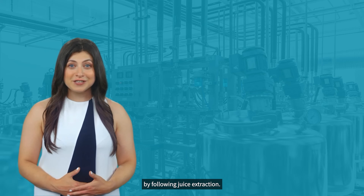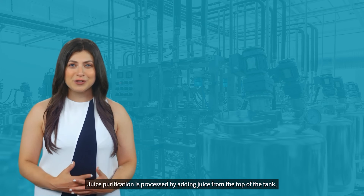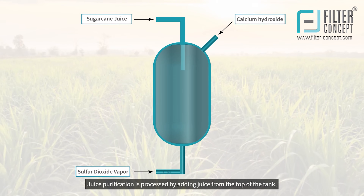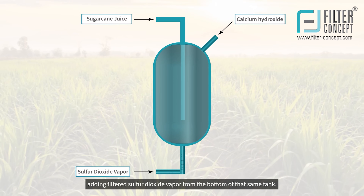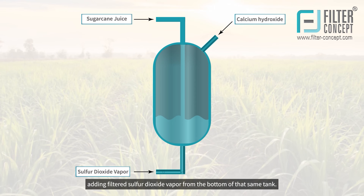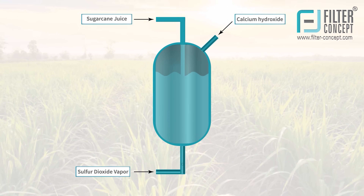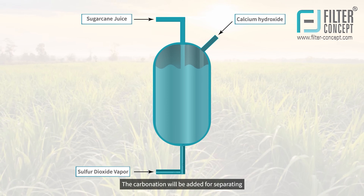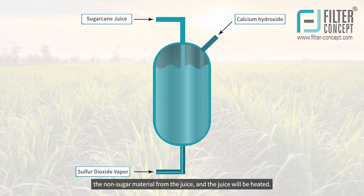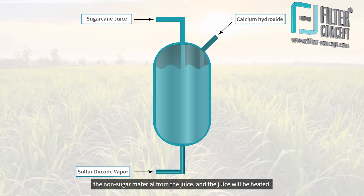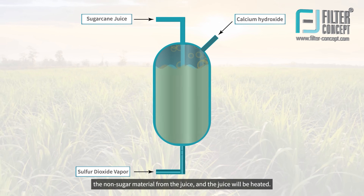Following juice extraction, juice purification is processed by adding juice from the top of the tank and adding filtered sulfur dioxide vapor from the bottom of that same tank. Carbonation is then added for separating the non-sugar material from the juice, and the juice will be heated.